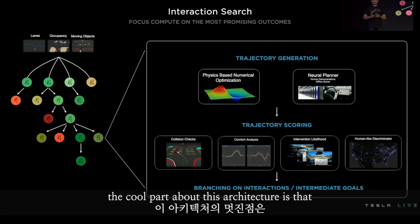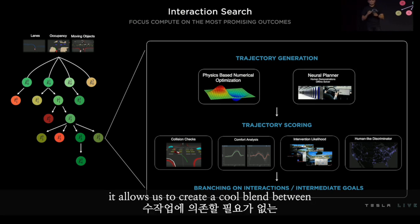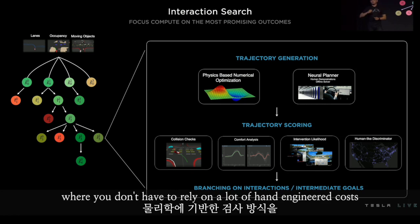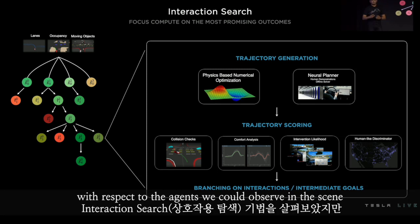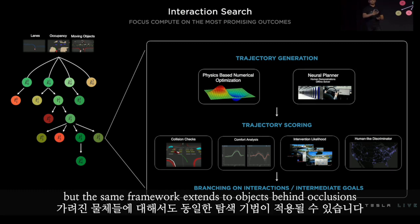The cool part about this architecture is that it allows a blend between data-driven approaches — where you don't have to rely on a lot of hand-engineered costs — but also grounds it in reality with physics-based checks. A lot of what I described was with respect to the agents we could observe in the scene, but the same framework extends to objects behind occlusions.